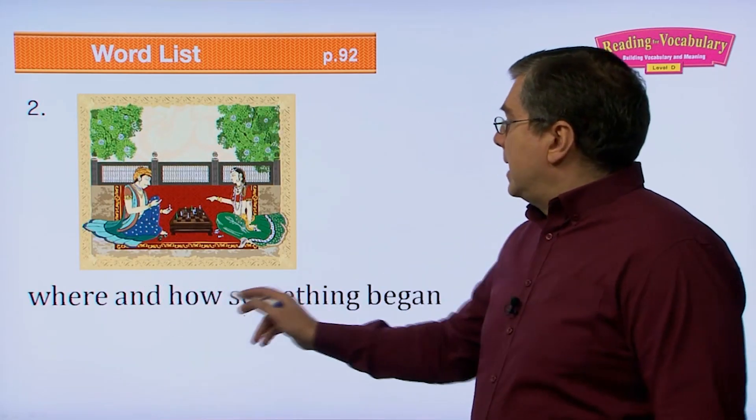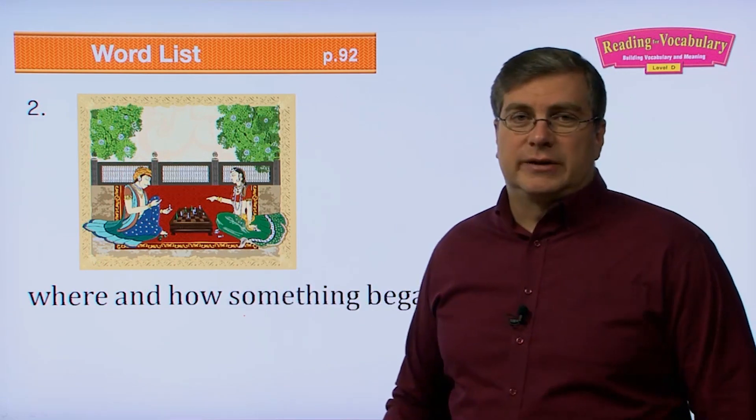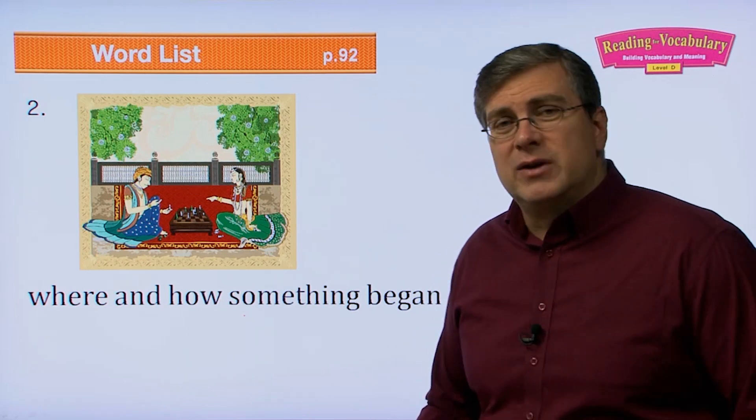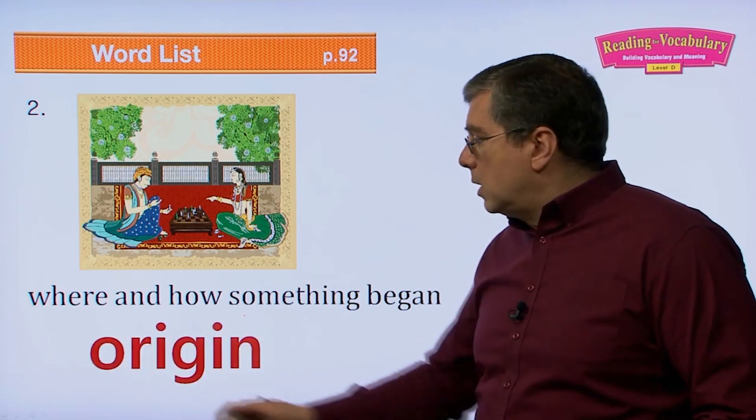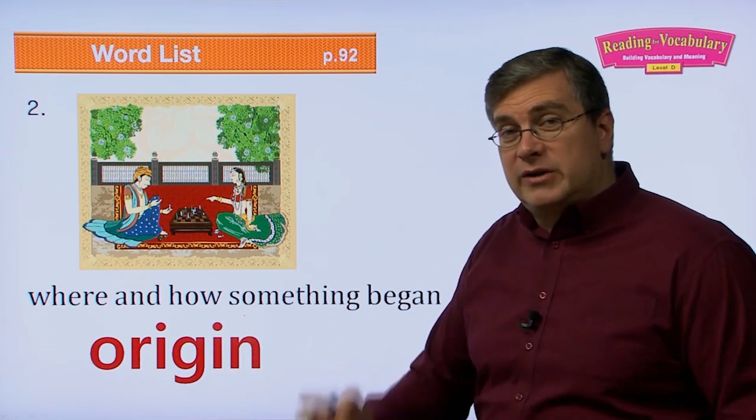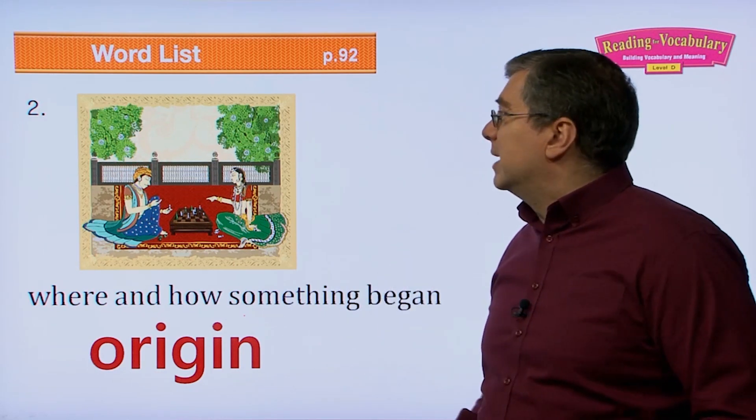Number two, where and how something began. So we think about a game like chess or a certain type of dress or a certain type of doing things. Where did it begin? What was the origin? Where did it start? Where did it begin? That's the origin. How and where something began.